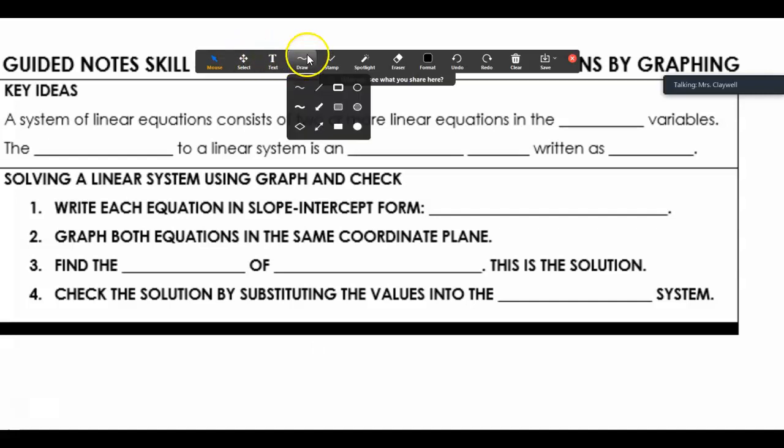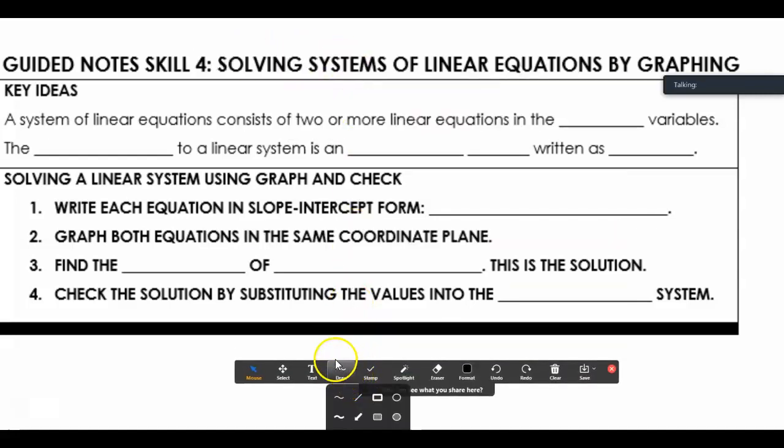This is in your notes. Our key idea is a system of linear equations is two or more equations with the same variables. Those are usually going to be x and y.